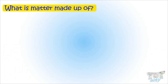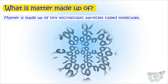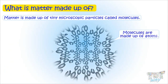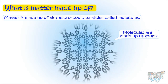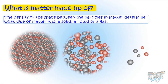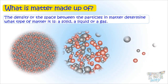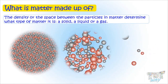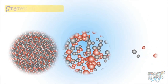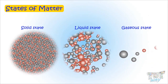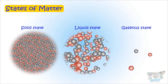Now we will see what matter is made up of. Matter is made up of tiny microscopic particles called molecules, and further, molecules are made up of atoms. The density and the space between particles of matter determine what type of matter it is — a solid, a liquid, or a gas — depending on the density and the space between the particles.